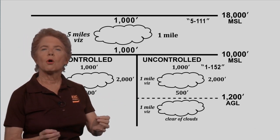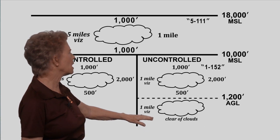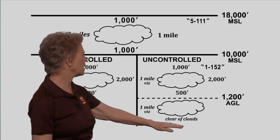At and below 1,200 feet AGL, the requirement is one statute mile in-flight visibility, just like higher. But now it's just clear of clouds.